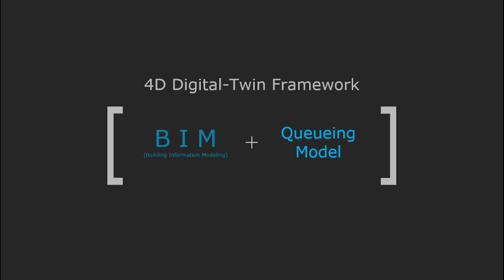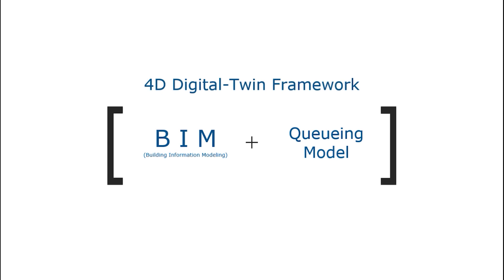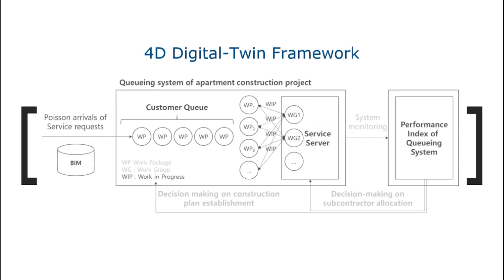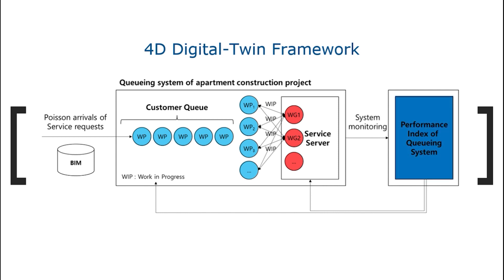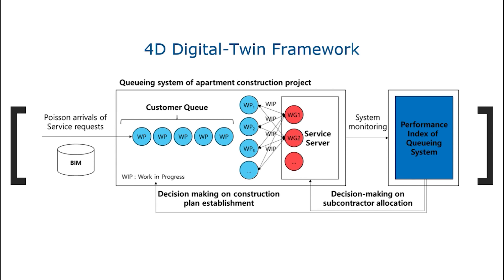The 4D digital twin framework combines BIM-based BOQ as the data server and queuing models as the decision-making model. As described, the complex construction production system is divided into service providers and customers who receive service. In this process, resource allocation is made based on the empirical knowledge of the general contractor. The queuing system of the apartment construction can be expressed as work groups and work packages. Depending on how resources are allocated, the service status of the queuing system changes. The general contractor monitors the system's status through performance indexes, and if performance differs from the plan, allocation can be adjusted at the micro level.